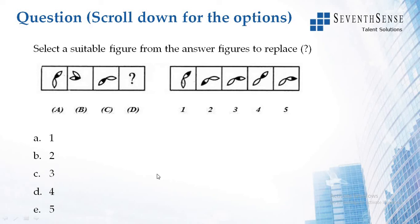In this given question you have to find out what is the pictorial series. Observing the 5 given options — 1, 2, 3, 4, and 5.